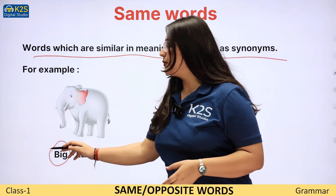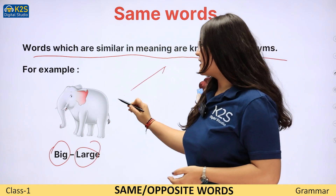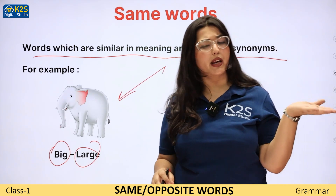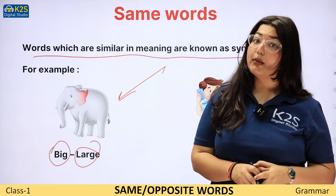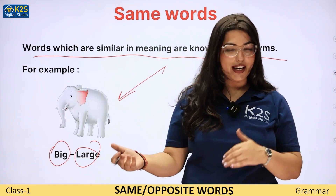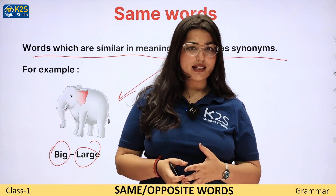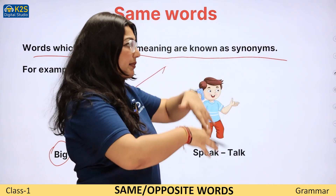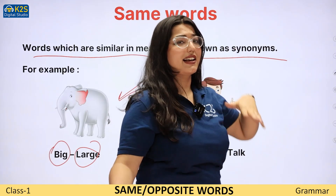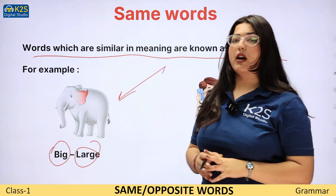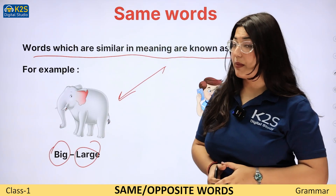Such as big and large. Agar mein is elephant ko — ya toh mein is ko big bhi bol sakti hoon, aur mein is ko large bhi bol sakti hoon. Kyunki in dono ka jo meaning hai woh same hai. It means to show something which is very large in size, very huge, very big. So in sab ka matlab same ho gaya.